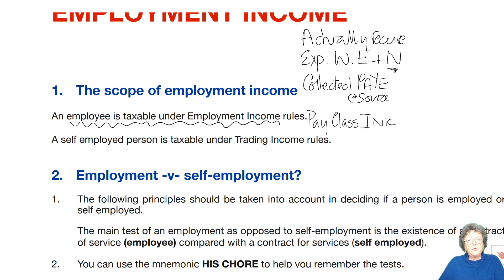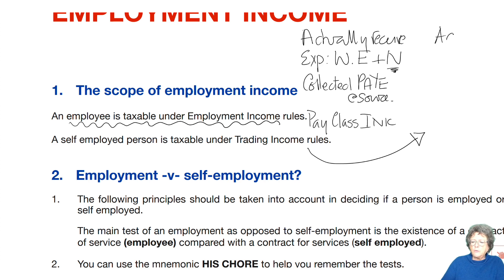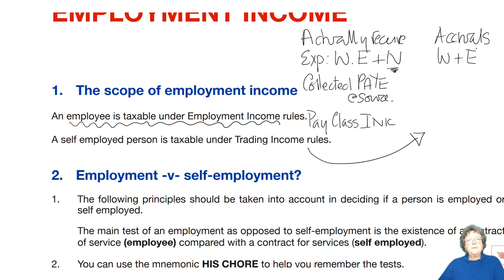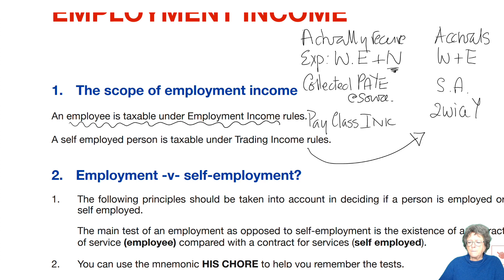If you look in the tax tables, you'll see how much that is. If you are a person who is self-employed, it's all done on an accruals basis, unless you've chosen the cash basis. Expenses are wholly and exclusively only, as covered in the previous chapter on adjusting profits. You pay the tax under self-assessment twice a year: 31st of January and 31st of July.